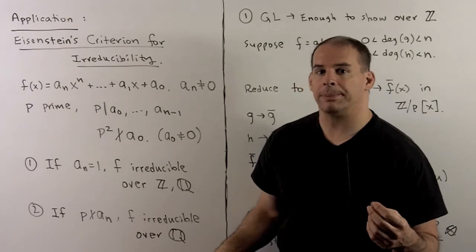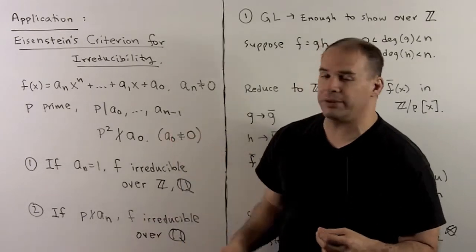For another application of Gauss's Lemma, we have Eisenstein's Criterion for Irreducibility.